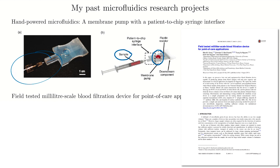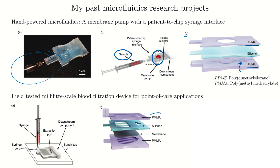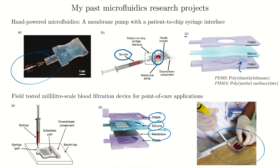Another project was a field-tested milliliter-scale blood filtration device for point-of-care applications. I partnered with the National Hospital for Tropical Diseases in Vietnam. We were trying to make a device that didn't need a big centrifuge to separate plasma from the solid parts of blood — the hematocrit — because you often want the liquid plasma for running tests. This project focused on testing for hepatitis B. The layered device used PMMA, silicone, and a membrane that went from larger to smaller openings, physically trapping the solid blood cells while only fluid could pass through. We tested it at the hospital and it worked really well.